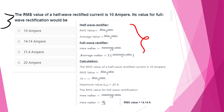The RMS value of the half-wave rectified current is 10A. So Im/2 = 10A, meaning Im = 20A. For full-wave rectification, RMS = Im/√2 = 20/√2 = 14.14A.